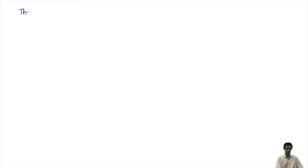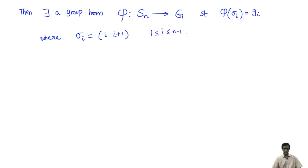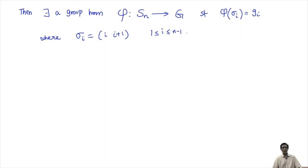In other words, if you find n−1 elements of G satisfying the same relations that the generators of Sn satisfy, then there exists a group homomorphism from Sn to G sending the transposition σi = (i, i+1) to Gi. That is all you need: if those elements satisfy the relations, a well-defined group homomorphism automatically exists.